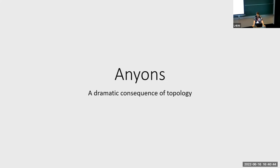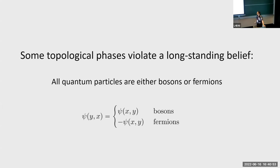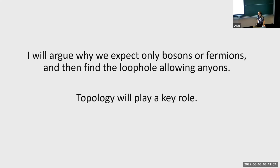I'm not going to go into the details of how you can effectively rip an electron into three pieces, but I'm going to talk about the physical consequences of this measurement and how we understand this phase of matter. This is the concept of anyons — a rather dramatic concept of topology. I'm going to describe how some topological phases violate a longstanding belief, which is that all quantum particles are either bosons or fermions. I'll explain exactly what I mean by that in a moment, argue why we expect only bosons or fermions to exist, and then find the loophole that allows anyons to exist. Topology is going to play a key role in this argument.